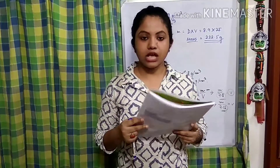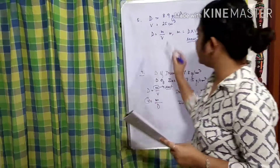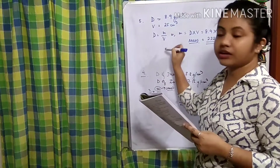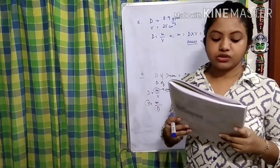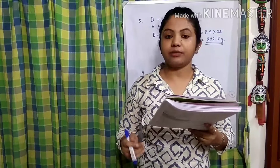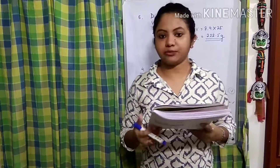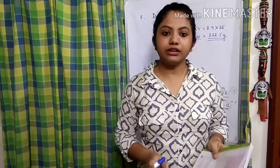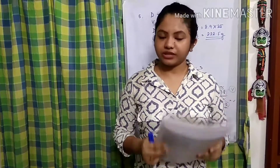Number four: density of a substance increases when the mass of a substance is increased for a given volume. Yes — when mass is increasing, density increases; when volume is decreasing, density also increases. That is true. Number five: density of a substance increases when the volume is increased for a given mass. According to the relation, that is a false statement. So these are the questions we discussed, related to all the topics studied so far. We are going to move to the next topic in our next class. Thank you for watching.